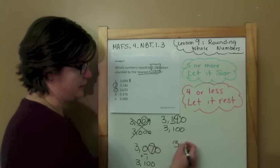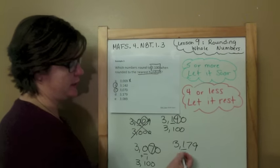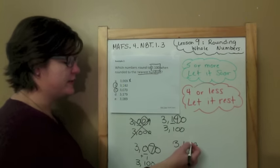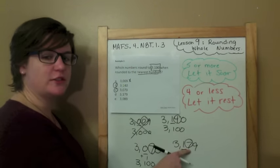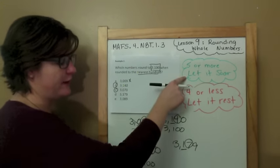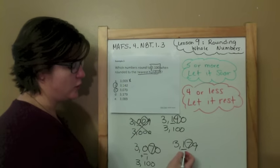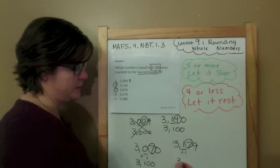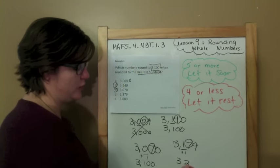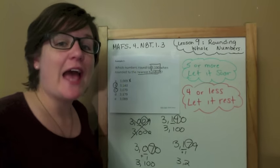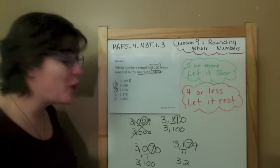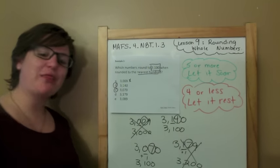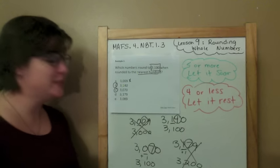Let's do 3,179. Rounding to the hundreds place. When you round, underline the place. Spotlight to the right — decide the digit's fate. Five or more, let it soar. Add one to the rounding place. Three comes down. One plus one is two. Everything else becomes zeros. That's not what I wanted. I wanted 3,100, not 3,200. Are you kidding me?